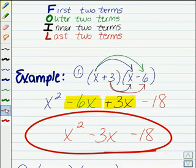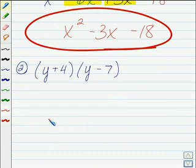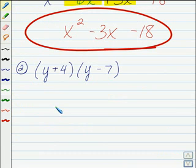Taking a look at one last example here, I want you to work through it using the FOIL method — first, outer, inner, last. When you've gotten your answer, click continue at the bottom of the screen.